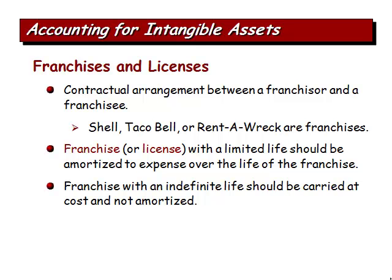A franchise or license is a contractual arrangement between a franchisor and a franchisee — examples include Shell, Taco Bell, and Subway. A franchise with a limited life should be amortized to expense over the life of the franchise. A franchise with an indefinite life should be carried at cost and not amortized. So if we pay a fee to get the license to run a Burger King for a certain period, we expense it over the life of the agreement; otherwise we capitalize it and don't amortize it.